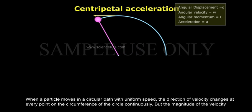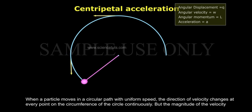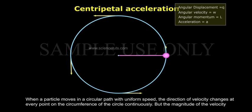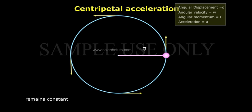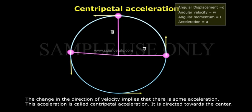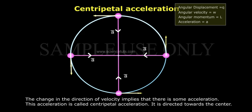Now we discuss centripetal acceleration. When a particle moves in a circular path with uniform speed, the direction of velocity changes at every point on the circumference of the circle continuously, but the magnitude of the velocity remains constant. The change in the direction of velocity implies that there is some acceleration. This acceleration is called centripetal acceleration, and it is directed towards the center.